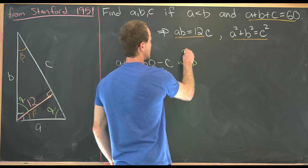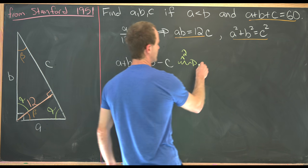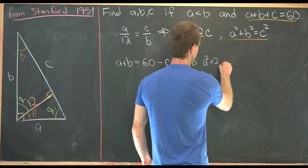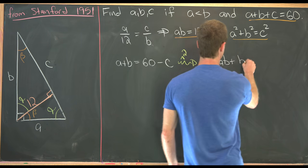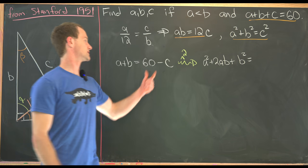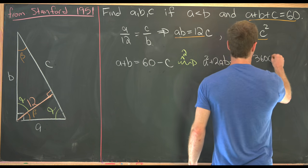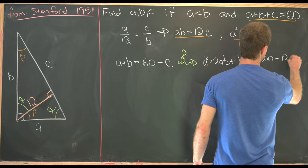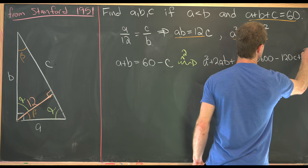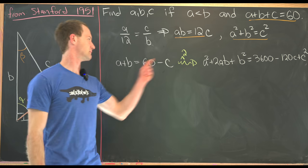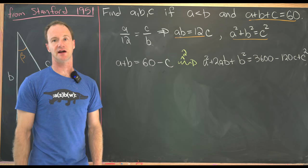So here, taking this equation and squaring it, we see that we have A squared plus 2AB plus B squared equals 3600 minus 120C plus C squared. So that's just from multiplying out the left and the right-hand side of this equation.